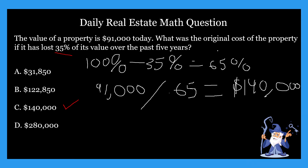There are two steps in this problem. The first step is taking 100% minus 35% — the value that it lost — which gives us 65%. Then from there, you take today's value of $91,000 and divide it by 65%, which represents today's value as a percentage. That gives you $140,000.